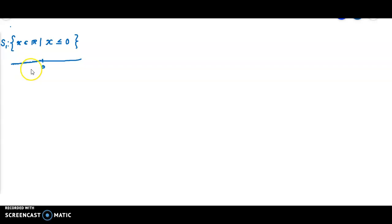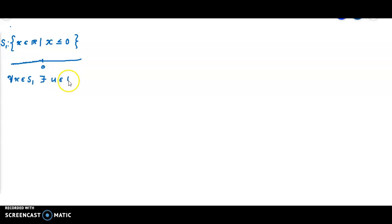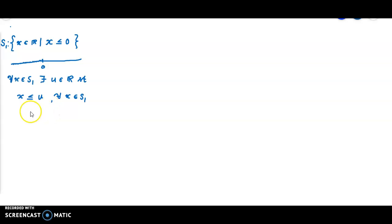Given any point of the set S1, you can find a point of the real line which is greater than every point of the set. That is, for all x element of S1, there exists u element of the real line such that x is less than or equal to u for all x element of S1. Then that u is called an upper bound of S1.